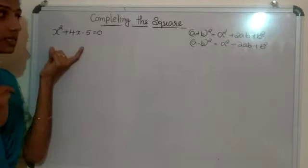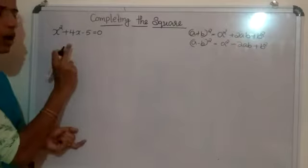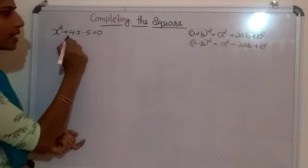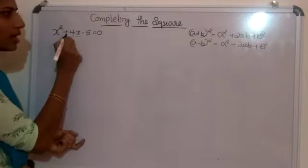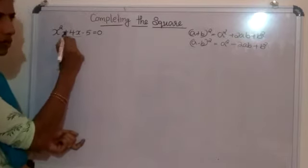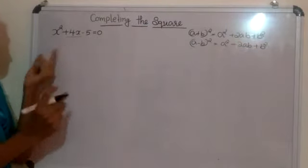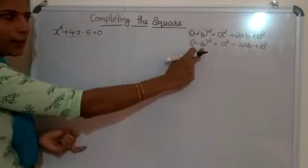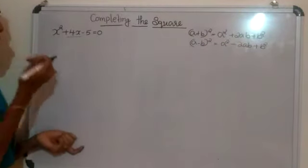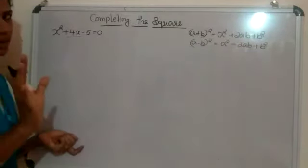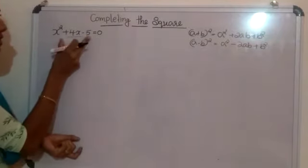Now the first step is to check which identity we need to apply. For that, consider the coefficient of x. If this coefficient is positive, we can apply the first identity, (a + b)². If this part is negative, we apply the (a - b)² identity. That is the first step.